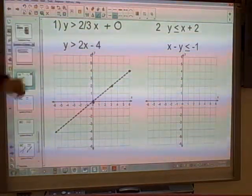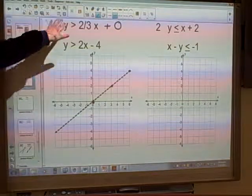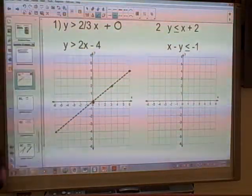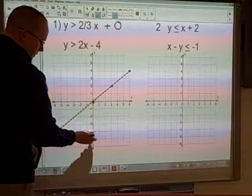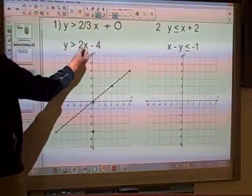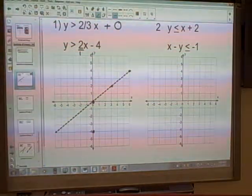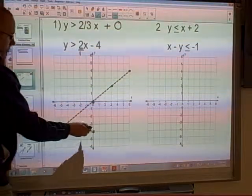For our other equation, 2x minus 4, and I know I have to do the shading for this, I'm going to come back to that in a second. 2x minus 4, so we start with negative 4 on the y-axis. Make it into a fraction, so 2 over 1, so we've got a slope of 2.